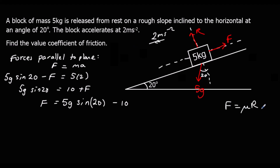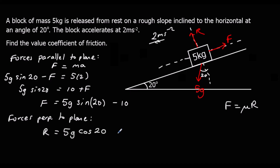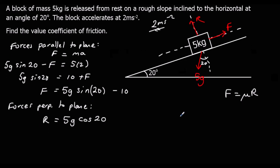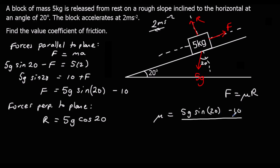We know friction equals mu times R, so we need to find R. Looking at the forces perpendicular to the plane, R equals 5G cos 20. Now we can find mu: mu equals friction divided by the normal reaction, so (5G sin 20 minus 10) over 5G cos 20. Typing into the calculator and rounding to two significant figures gives 0.15.